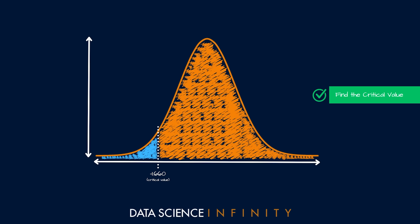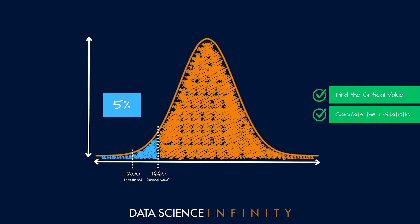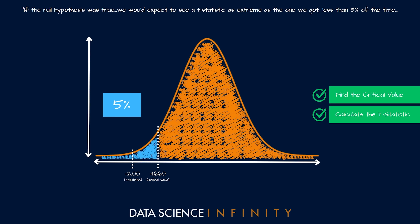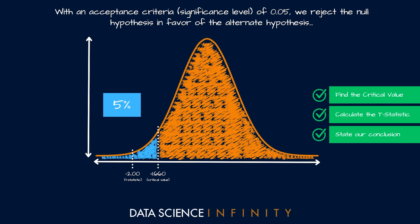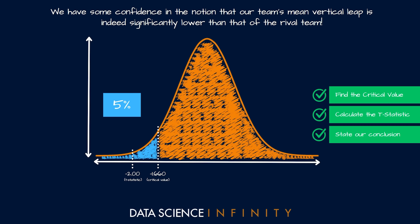Heading back to our distribution, the t-statistic of negative 2.00 falls outside the critical value, landing in the 5% area. This means: if the null hypothesis were true and there was truly no difference between the teams' mean vertical leaps, we would expect to see a t-statistic this extreme less than 5% of the time. Because that is quite a rare event, we see this as evidence that the null hypothesis is unlikely to be true, and so we formally reject it.